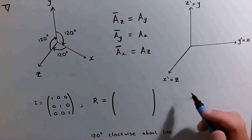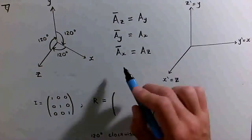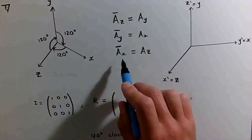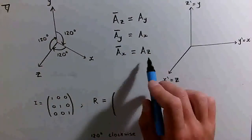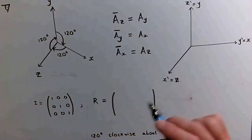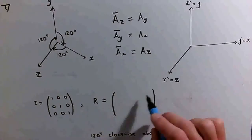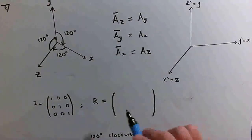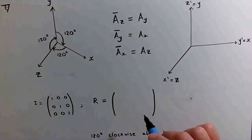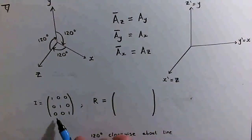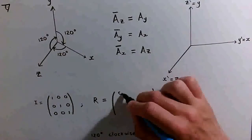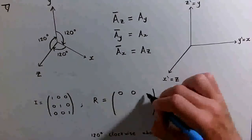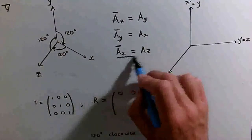The modified coordinate x is just the same as the original z coordinate, so that means the first row, i.e. the modified x row of our rotation matrix, is just the third row of the identity matrix: 0, 0, 1, because of this.